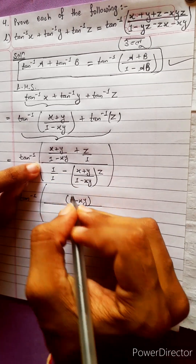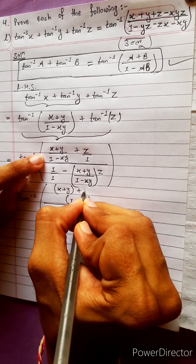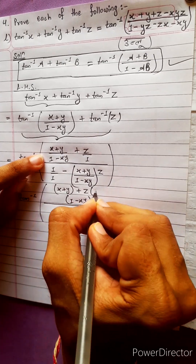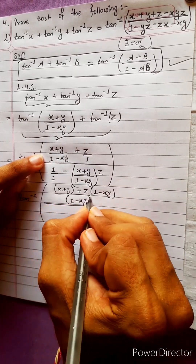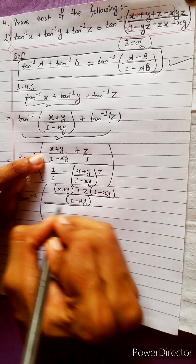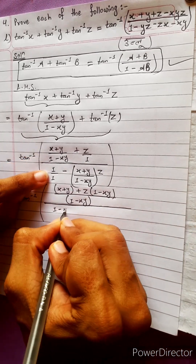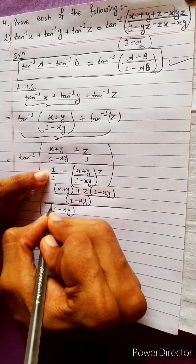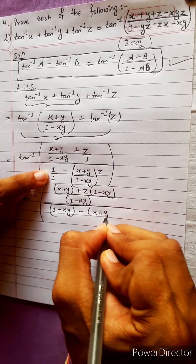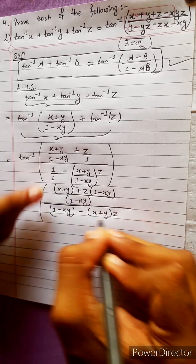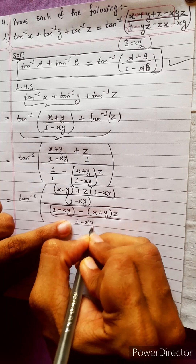We take LCM. So we get x plus y plus z times 1 minus xy, whole divided by 1 minus xy minus x plus y into z upon 1 minus xy.